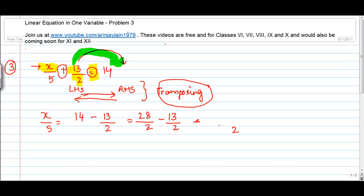So the LCM of this number is going to be 2 and we can write this as 28 minus 13 or 15 divided by 2. So x by 5 is equal to 15 divided by 2.